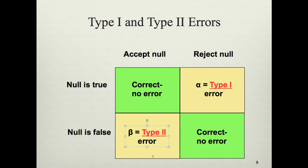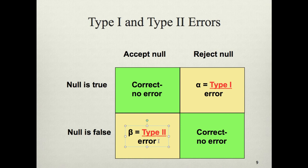Another type of error is called beta. Beta error is when the null is false — there is a difference between a control group and a treatment group — but in our experiment we accept the null and find no difference. This is another type of error, though not quite as grievous.